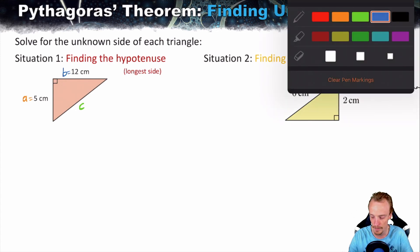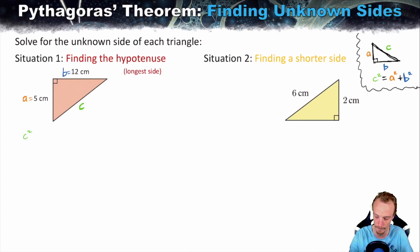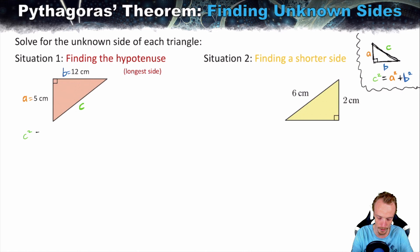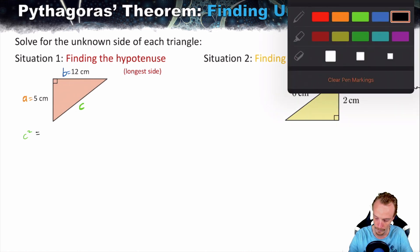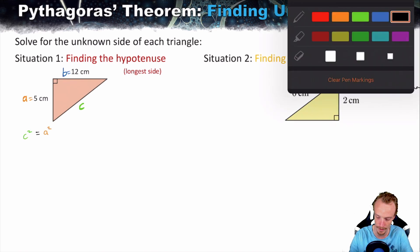Step two is to actually write down Pythagoras theorem itself. So Pythagoras theorem is: C squared is equal to A squared plus B squared.